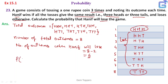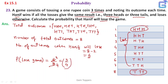So the probability of losing the game will be six out of total, which is eight. That simplifies to three-fourths. So the probability is three out of four.